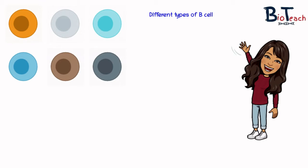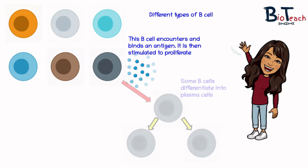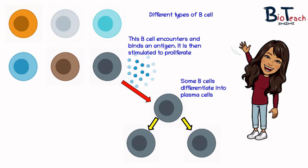Here is an example of how B-cells would mount an immune system response. We have different types of B-cells, each represented by a different colour, and each can recognise only one specific antigen. The grey B-cell will encounter an antigen and bind to it, then it is stimulated to proliferate — producing many clones through mitosis. Each of the clones will produce the same kind of antibody, and this is known as clonal selection because the antigen selects the B-cells that will proliferate.